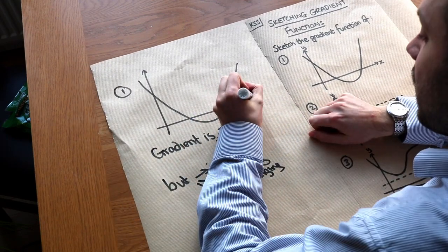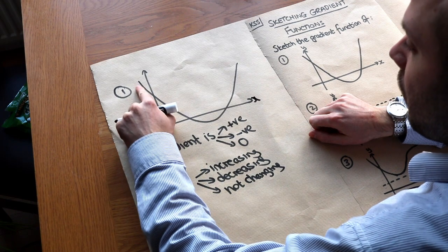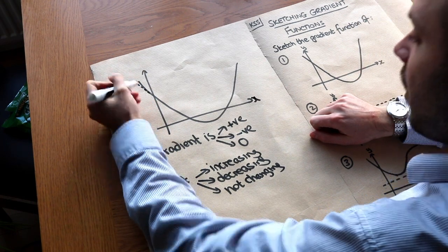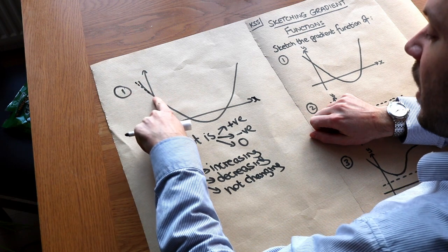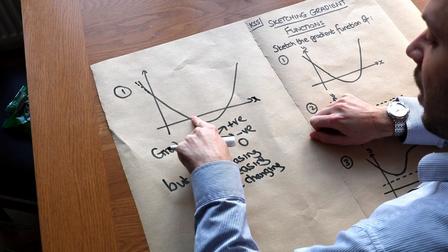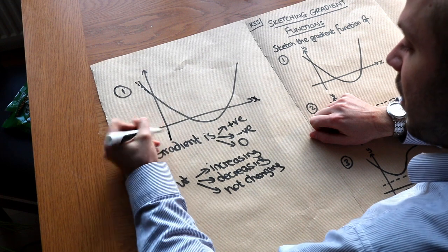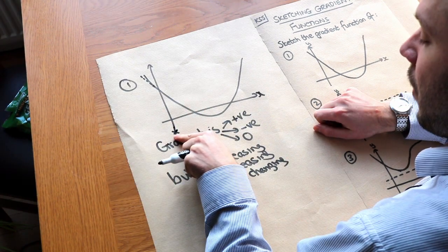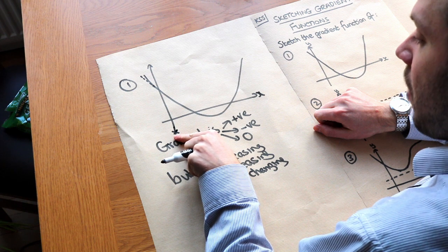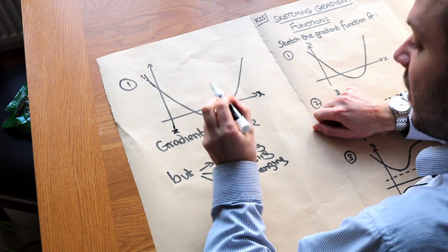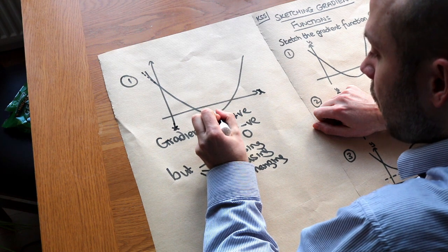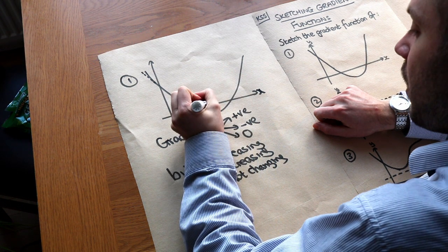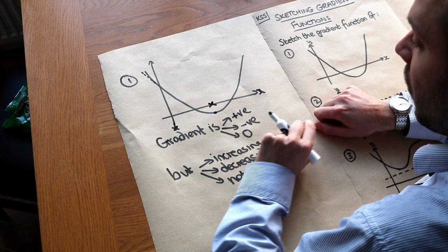Let's consider this first point here. We can see that the gradient is negative — it's going downhill. But the gradient is gradually increasing, gradually approaching zero. So we can see that the gradient initially is negative. Let's put our first gradient here: it's a negative gradient but it's increasing, until at this point here the gradient is zero. So we can put a little cross here as a point on our gradient function.